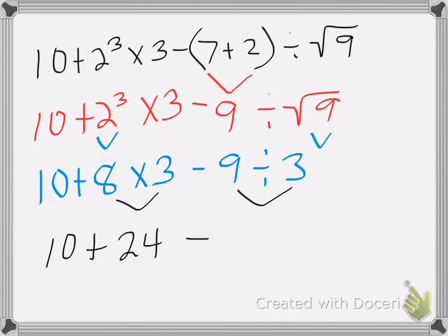And scooch it over. All right, so now I have 10 plus 24 is 34 minus three is equal to 31. And that's my answer.